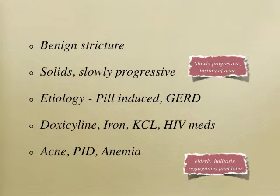Plummer-Vinson syndrome is extremely rare, so if they give you a barium showing a web, that may be it. But if they give you a young woman on iron pills with dysphagia, it's probably an ulcer from the pill that healed with fibrosis. An older patient with osteoporosis taking bisphosphonates can also develop this. Most patients may not need any intervention, but some will need dilation once and then should do well.